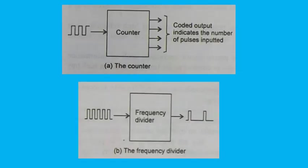The counting operation is very important in digital systems. A logic circuit used to count the number of pulses inputted to it is called a counter. In order to count, the counter must remember the present number so it can go to the next proper number in sequence when the next pulse comes. Flip-flops are used to build counters. A counter can also perform frequency division — to divide a signal of frequency F by N, the signal is applied to a mod-N counter, producing output frequency F/N.